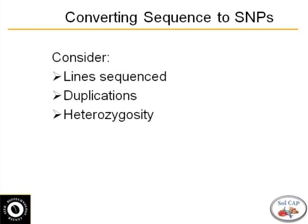When you're converting sequence to SNPs, the first thing you want to look at is your data — okay, what lines did we sequence? And David really highlighted that nicely. There are SNPs coming from the processing type lines, SNPs that come from the fresh market, some from the cherry tomato types, and then some from Pampinol folium. Obviously, those different types of SNPs will have different applications relevant to your breeding program depending on your focus.